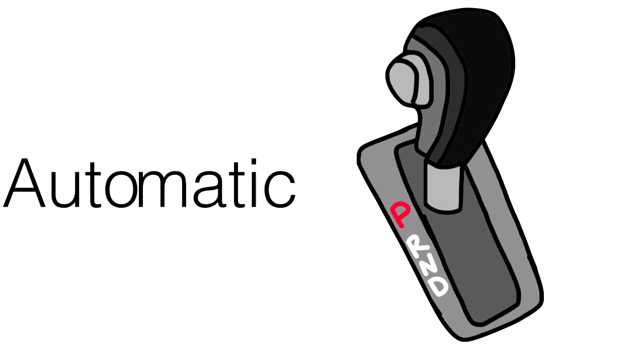Automatic — my car has an automatic transmission, which means that it will shift gears by itself. Autograph — that's a signature by one's self.